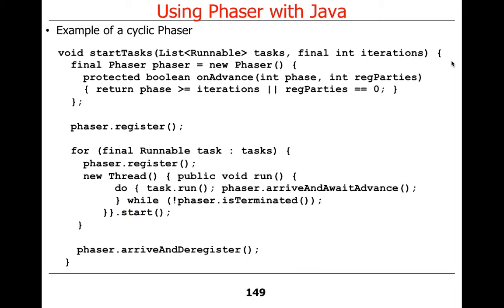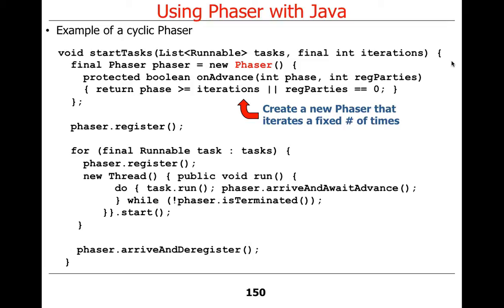Here's an example of a cyclic phaser. It works in a more convoluted manner, and this is also from the documentation. We start out by making a new phaser. We take a list of tasks, a list of runnables, and a number of iterations. We allocate a new phaser with no initial parties registered — it defaults to zero.